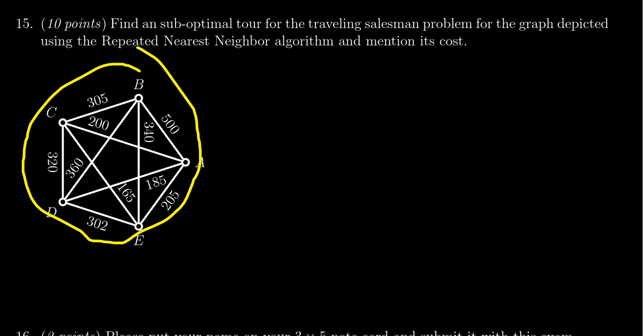the repeated nearest neighbor algorithm. We've got to try every vertex as a starting point. If we start at A, the nearest neighbor is D, which is 185. At D, the nearest neighbor, let's see,